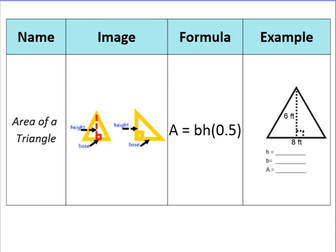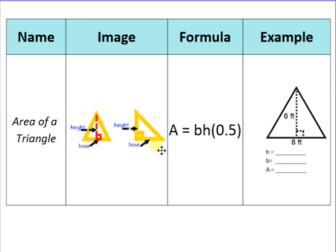On your formula sheet you have area of a triangle, and I want you to draw two different versions of a triangle and label them appropriately. In one triangle you have the height going down the middle, because remember that height is straight up and down — it is not slanted. We saw that in trapezoids and also in parallelograms, and the base is along the bottom. For a right triangle, it's already standing up straight, so the height is along the side and the base is on the bottom.